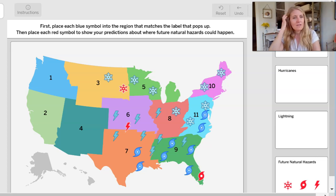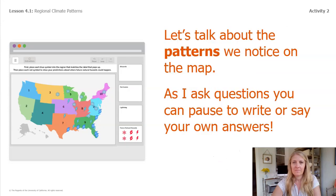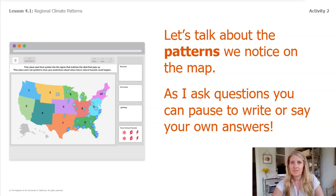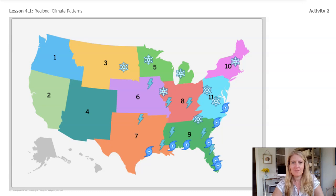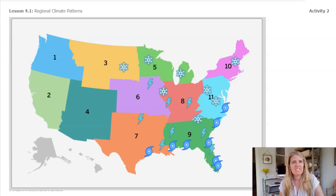Now we are going to take this map and look back at it and start to analyze some of the patterns. Let's talk about the patterns we notice on the map. This map is not the exact same as the one we just made, but it is a screenshot that helps us see some patterns. As I ask you questions, you can always pause, write down, or say your own answers. So let's just think about blizzards — what do you notice on this map about where blizzards happen? They all seem to be near each other up at the top of the map. Each time a blizzard happened, it happened near the top of the map. So there's a pattern to where blizzards occur.